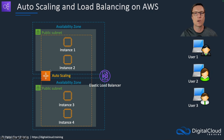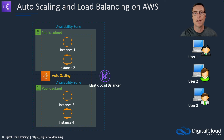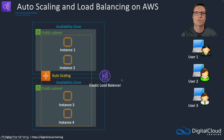The auto scaling group takes care of launching instances across different availability zones and makes sure there's at least the right number — whatever the desired count is that we specify. It watches metrics like performance metrics with CloudWatch to see how the instances are being utilized. If they're highly utilized, we can set some thresholds so the auto scaling group will scale automatically and elastically, launching instances when needed and terminating instances when needed to save cost.